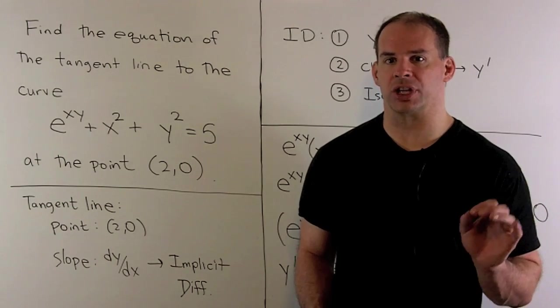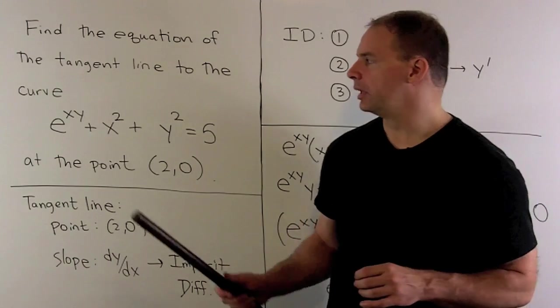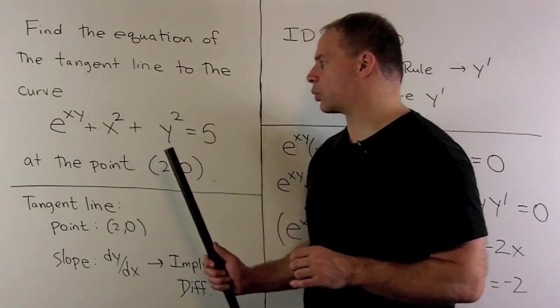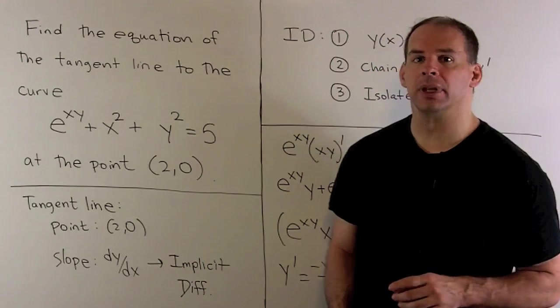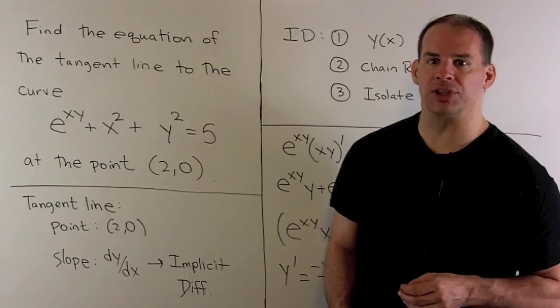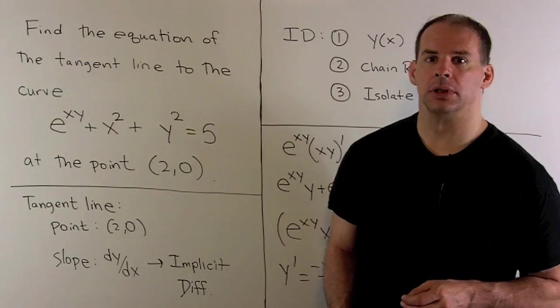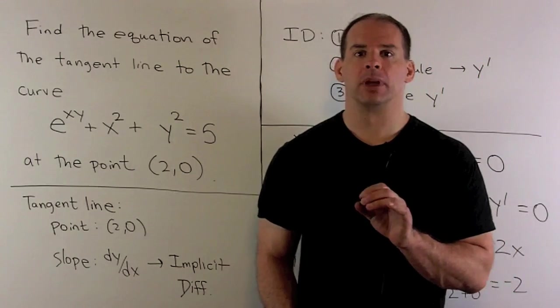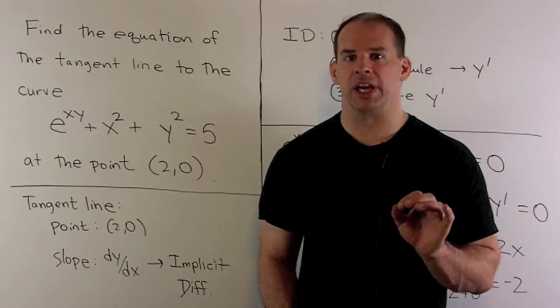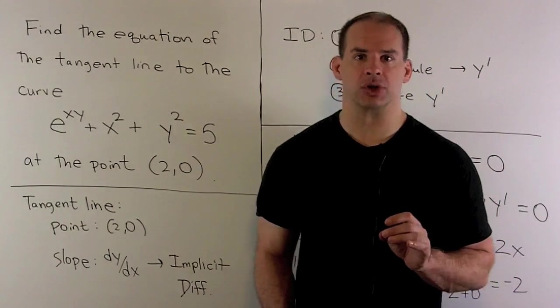Find the equation of the tangent line to the curve e^(xy) + x^2 + y^2 = 5 at the point (2,0). The point of this problem is to use implicit differentiation with an exponential function.